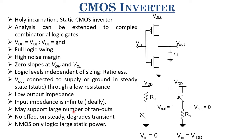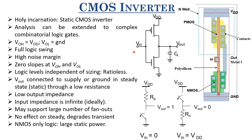Now let us look at the layout of the CMOS inverter. Layout is what you create to realize any logic circuit on chip — you make the layout and send it to the foundry for fabrication. A MOSFET in layout is defined by an active area (the doped region) and a polysilicon gate running through the middle of it.